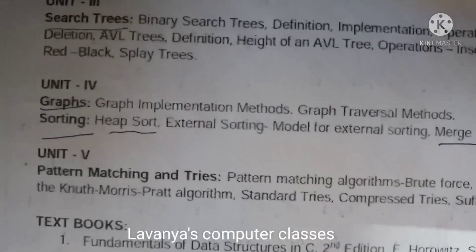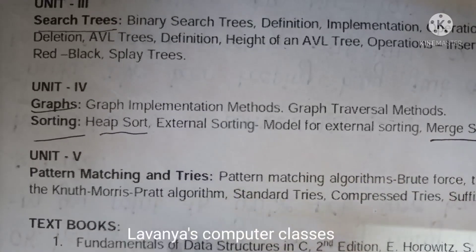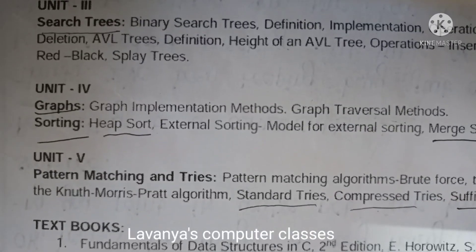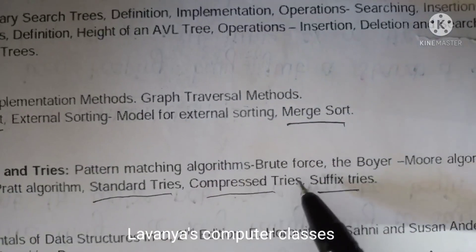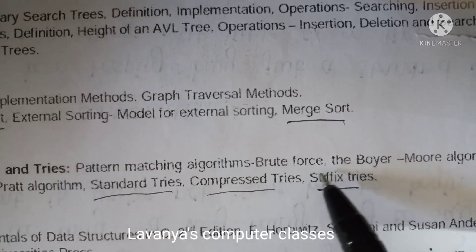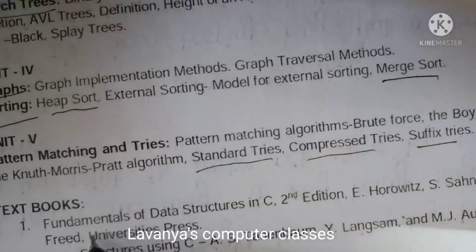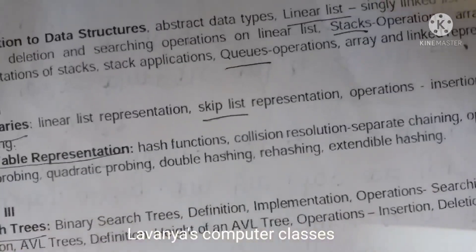In unit 5, pattern matching algorithms and tries. There are three types of tries: standard tries, compressive tries, and suffix tries. There are three different pattern matching algorithms: brute force, Boyer-Moore, and KMP algorithms. According to this, we have to read the data structures paper.